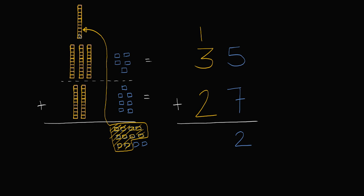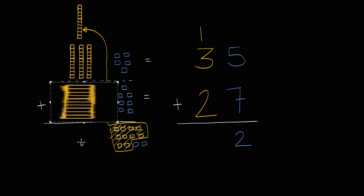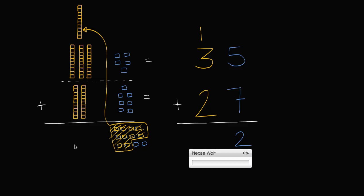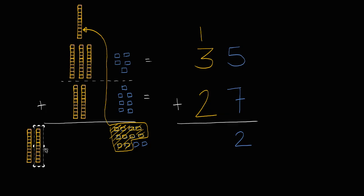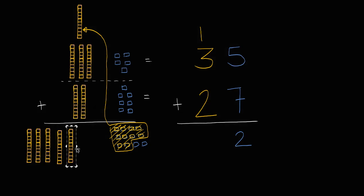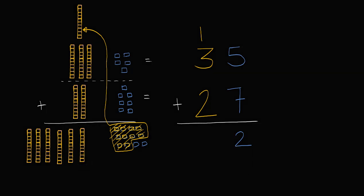And now we can add the tens place. We have one ten plus three tens plus two tens. Well that's going to be six tens. One plus three plus two is six. So we have one, two, three, four, five, and six tens. One plus three plus two tens is going to be six tens. Thirty-five plus twenty-seven is sixty-two. Thirty-five plus twenty-seven is six tens and two ones — sixty-two.